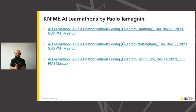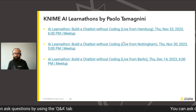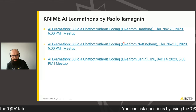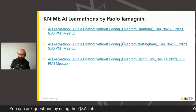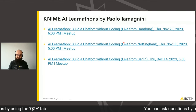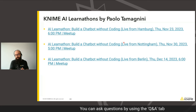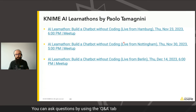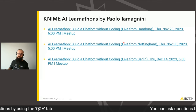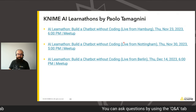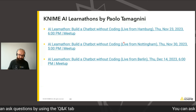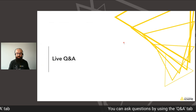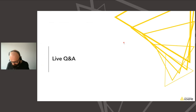There will be KNIME AI Learnathons by our colleague Paolo, taking place in November and December in Hamburg, Nottingham, and Berlin. If you are close to those cities, consider checking it out. It's a very nice experience being in a meetup and having someone instruct you hands-on how to build those workflows — much easier than following along in a webinar format. Paolo is also a very good teacher at getting people to really get the most out of KNIME for their own use cases. With that, we'll switch to the Q&A part of the webinar.